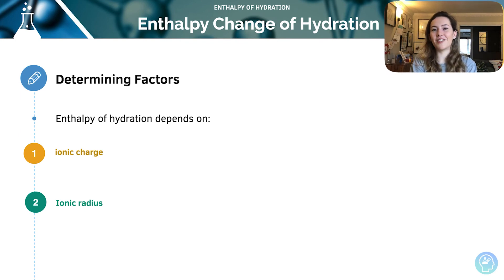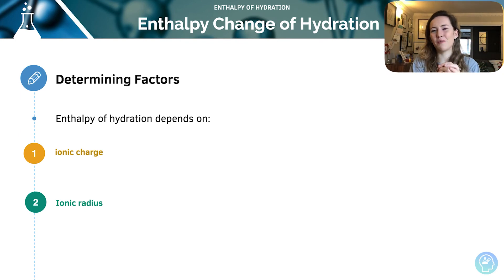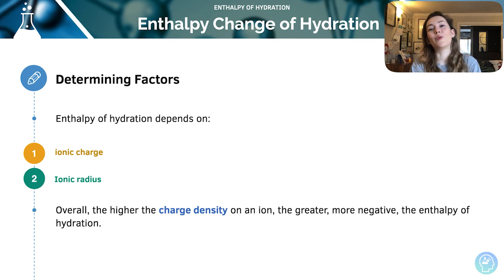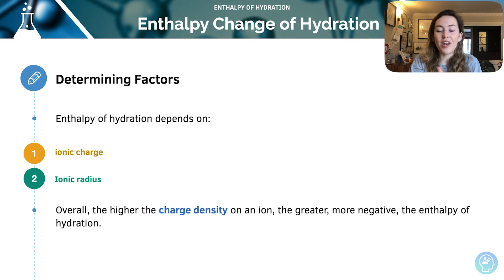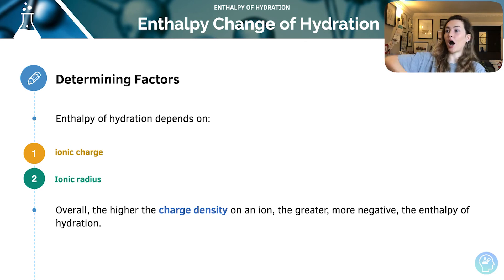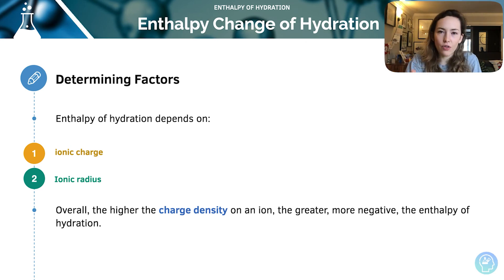So the greater the radius, the less dense those charges can be, and the less interaction there will be with those water molecules. Overall, we can say that the higher the charge density of an ion, the more negative, or the more exothermic, the enthalpy change of hydration is.